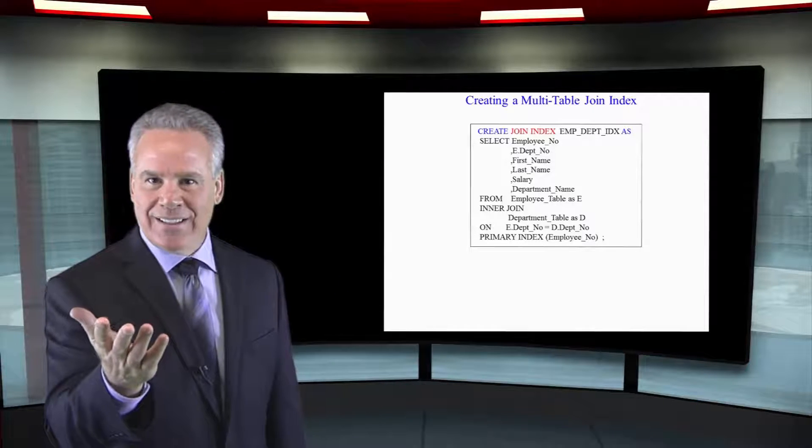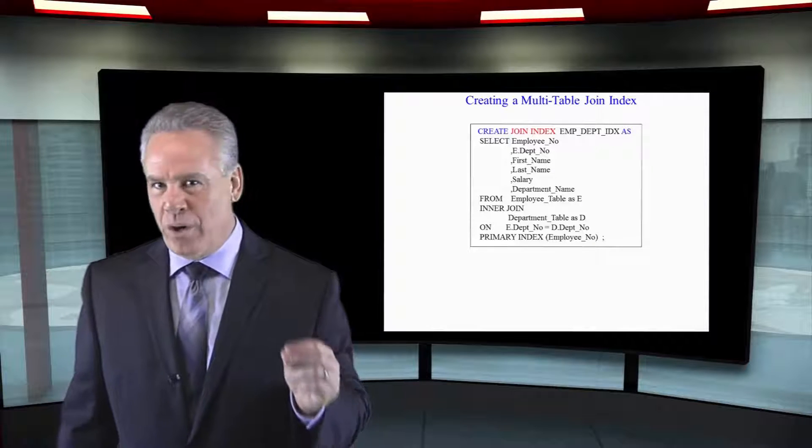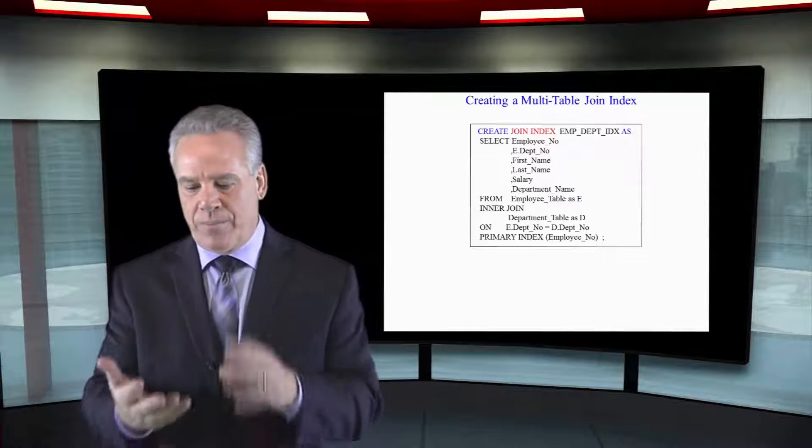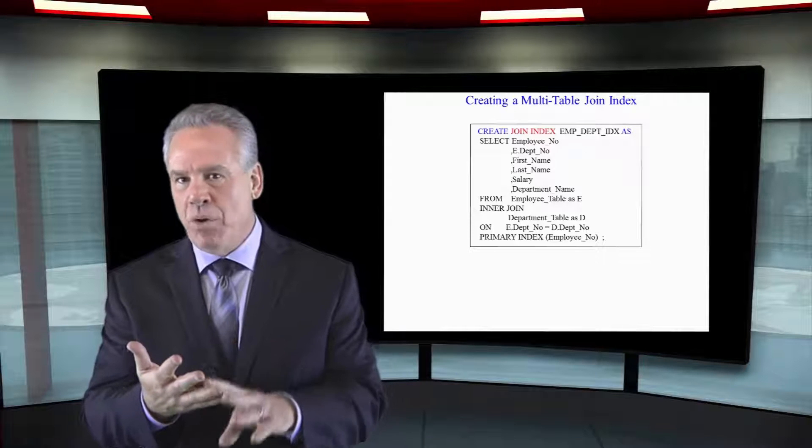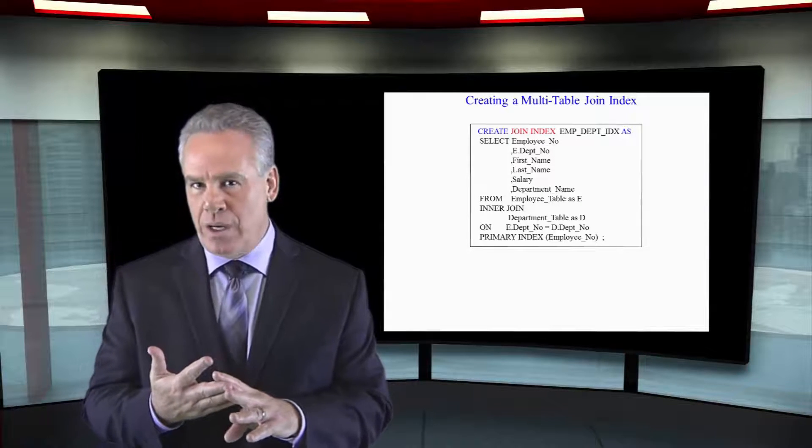That's what a join index is. Take a look at how to build a join index. There's three types: single table join index, multi-table join index, and what we're going to learn is an aggregate join index.